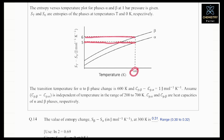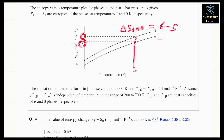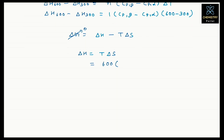At 600 Kelvin, the entropy change is 6 minus 5 equals 1. So delta S at 600 equals 1. Therefore delta H at 600 equals T times delta S equals 600 times 1 equals 600 joule per mole.